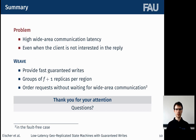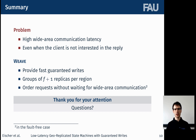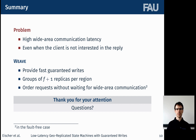To conclude, we presented Weave, which places groups of F+1 replicas in each region. These groups are able to order requests without having to wait for wide-area communication, in order to provide fast guaranteed writes. This helps solve the problem of clients needing to wait for wide-area communication latency even when they don't need the reply content. Thank you for your attention and I'm happy to take questions.